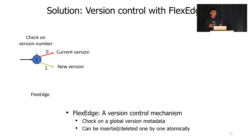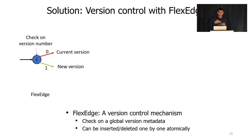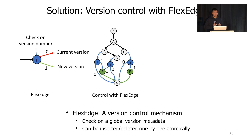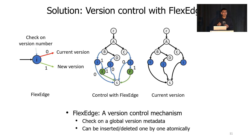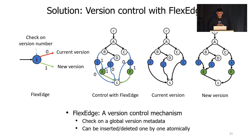To solve this problem, in FlexCore we designed a version control mechanism using FlexEdge. FlexEdge can be viewed as a branch that checks on a global version number. If the version number is zero, the traffic will be processed by the current P4 program. But if we set the version number to one, it will switch to the new version. FlexEdge can be installed into the program at runtime one by one atomically. With that, we can enhance the graph structure so that by default the version number of the FlexEdge is zero, meaning all traffic is processed using the current version of the P4 program. Then, if we set the version number to one simultaneously, all traffic will be processed by the new version. So FlexEdge enables us to achieve all the changes in one transaction.